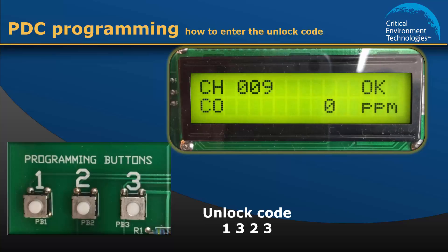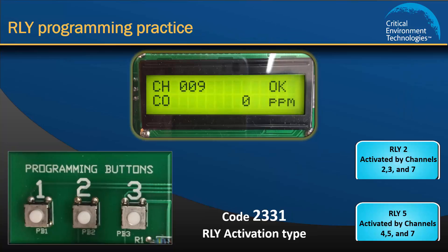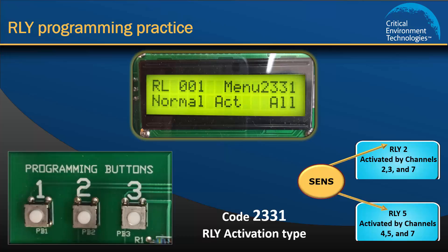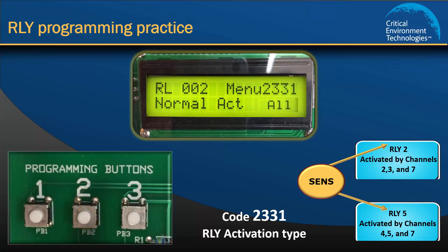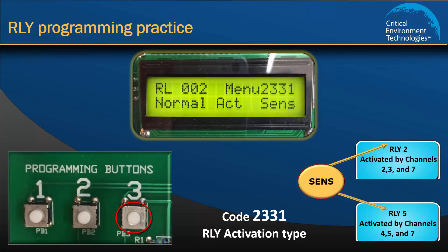Now we are ready to assign activation type Sends to Relay 2 and Relay 5. Use the programming buttons to enter the menu item code 2-3-3-1. The display will start at Relay 1 and progress through all the relays as you press the programming buttons. Relay 1 is set to All and we are not concerned with Relay 1 in this exercise, so press programming button 2 to proceed to Relay 2. By default Relay 2 is set to All, but we want to change that to Sends. Press programming button 3 once to scroll to None and then again to scroll to Sends. Save your selection by pressing programming button 2 and move on to Relay 3.